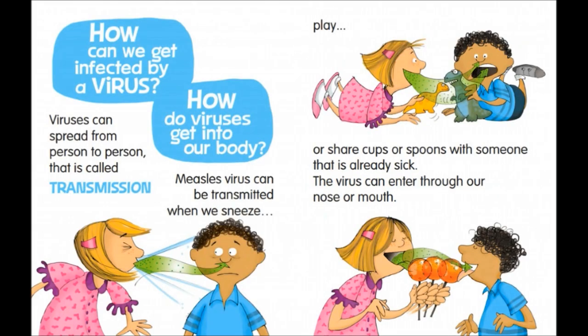How can we get infected by a virus? How do viruses get into our body? Viruses can spread from person to person — that is called transmission. Measles virus can be transmitted when we sneeze, play, or share cups or spoons with someone that is already sick. The virus can enter through our nose or mouth.